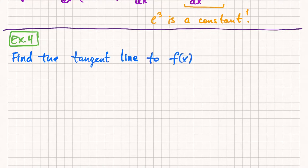Find the tangent line to f(x) at x equals 1. And the function is x cubed minus 3 divided by x squared.